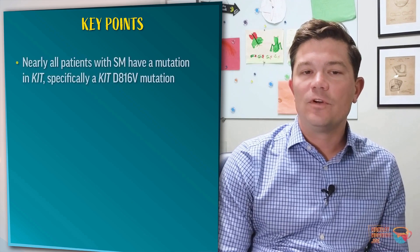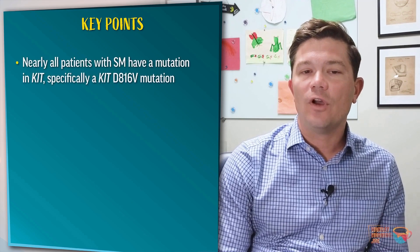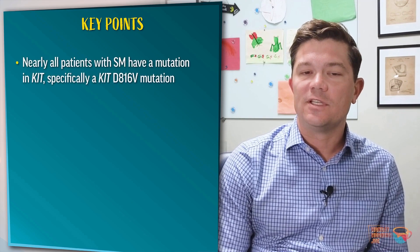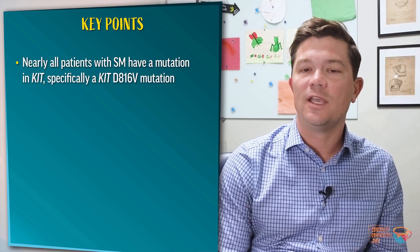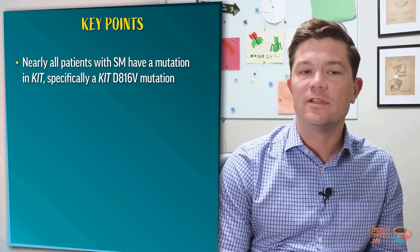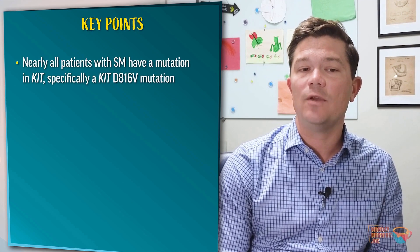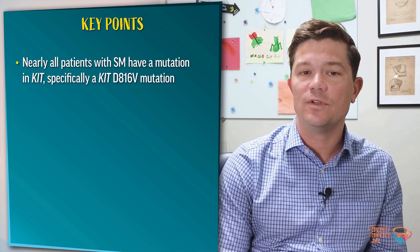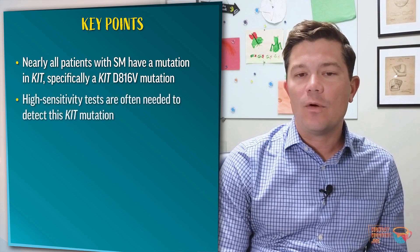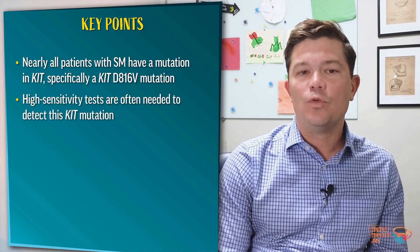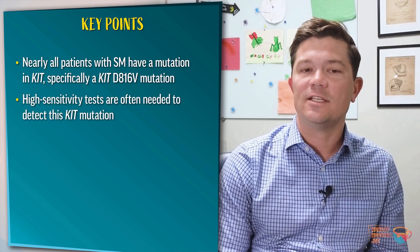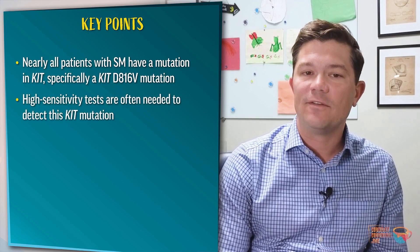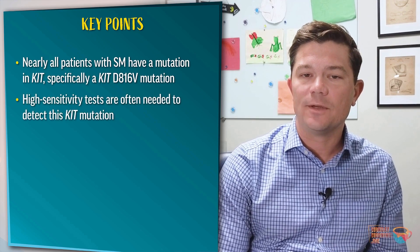What are some take-home points regarding mutations in systemic mastocytosis with an associated hematologic neoplasm? First, nearly all patients with systemic mastocytosis have a mutation in KIT, specifically the KIT D816V mutation.